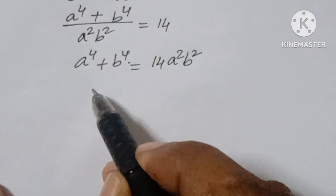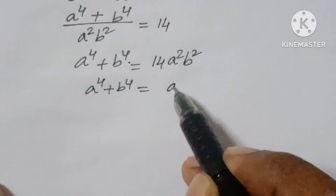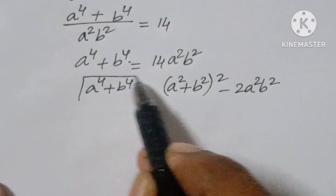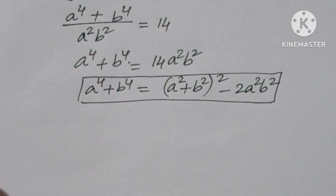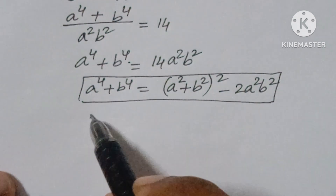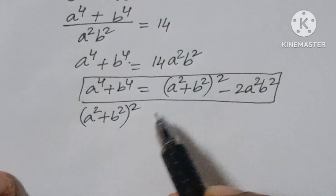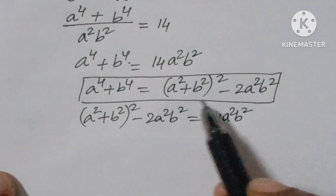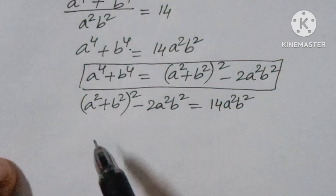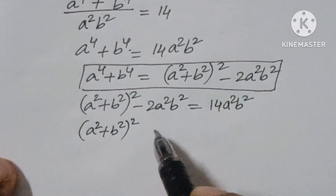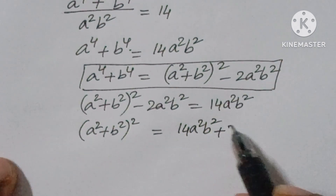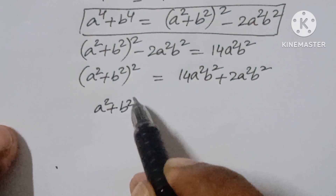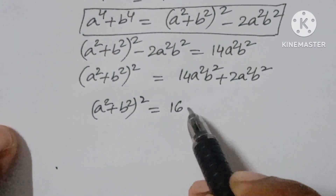Now, we know that a⁴ plus b⁴ is equal to (a² + b²)² minus 2a²b². So from this we can write (a² + b²)² minus 2a²b² equals 14a²b². Rearranging, (a² + b²)² equals 14a²b² plus 2a²b², which gives (a² + b²)² equals 16a²b².